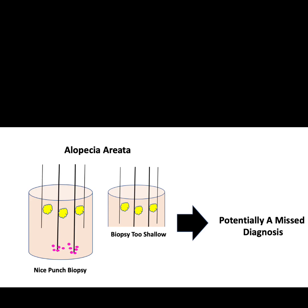Does performing a scalp biopsy that's too shallow really make a difference? Sometimes it does and sometimes it doesn't, which translates into sometimes requiring a patient to have another biopsy and sometimes not. Generally a biopsy should be performed into the subcutaneous fat and be five to seven millimeters in depth, depending on the area biopsied and the amount of fat there. The ability to diagnose hair loss is also dependent on the pathologist reading the biopsy — a very experienced pathologist can often gather a large amount of information, making it less critical that the biopsy was deep enough.